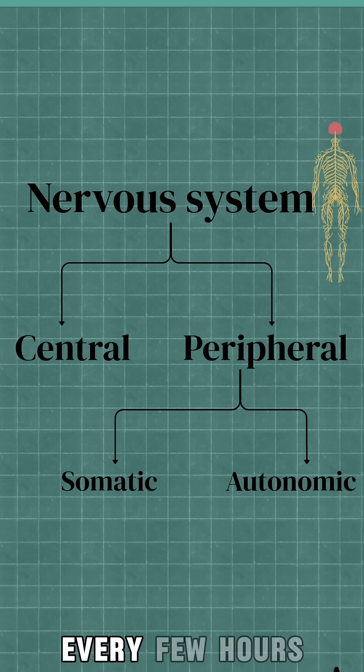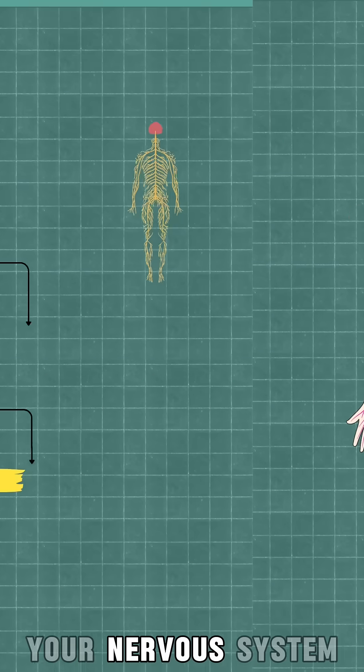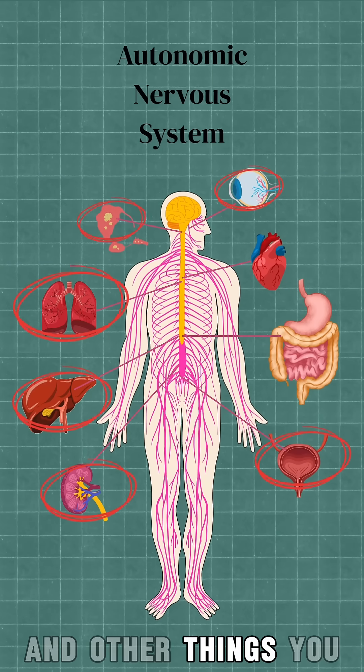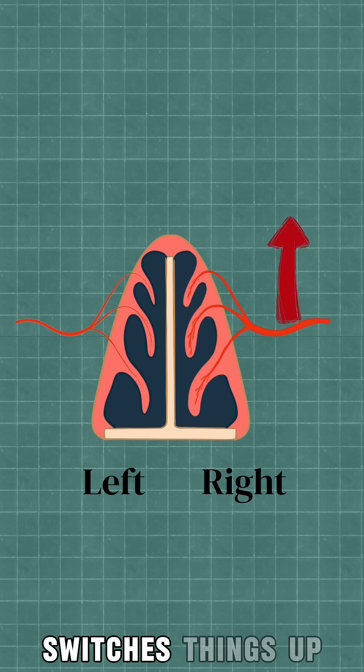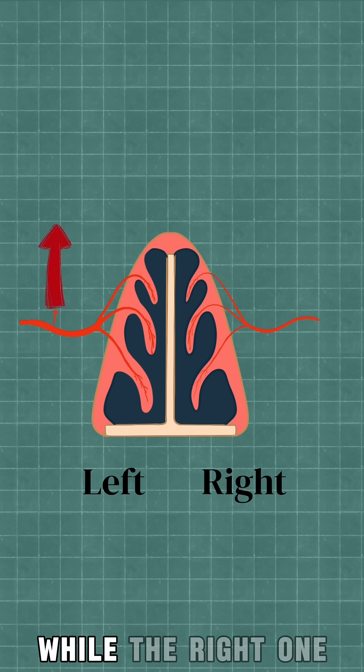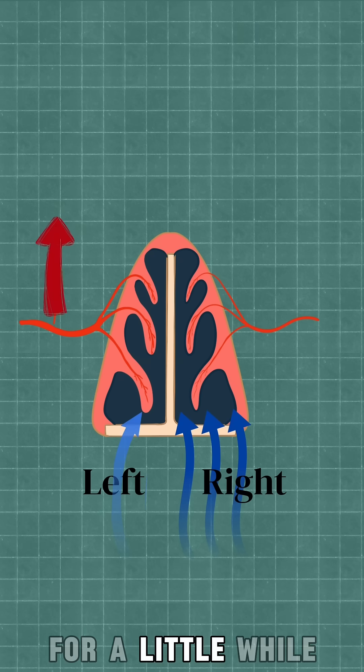Every few hours, your autonomic nervous system, which is the part of your nervous system that takes care of your heart rate, digestion, and other things you don't consciously control, switches things up. Your left nostril now receives increased blood flow and becomes congested while the right one does all the heavy lifting for a little while.